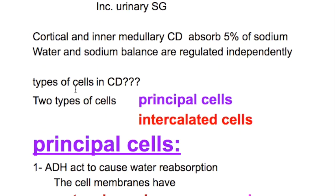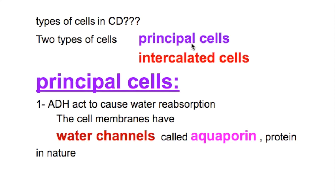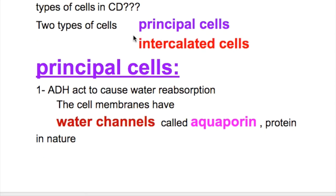There are two types of cells in the collecting duct: the principal cells and intercalated cells. The hormones that act on the collecting duct cells are aldosterone and ADH (vasopressin). Both of them act on the principal cells, whereas intercalated cells are concerned with acid-base balance.